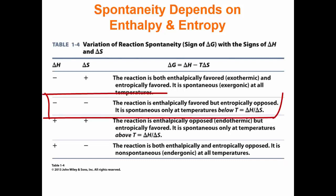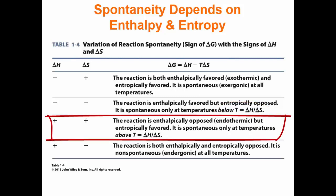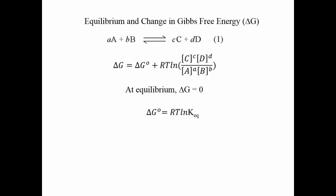When a reaction is exothermic but decreases in entropy, the spontaneity is dependent on temperature: at temperatures below the ratio of delta H over delta S, the reaction is spontaneous. If a reaction is endothermic but increases in entropy, it is only spontaneous at temperatures above the ratio of delta H over delta S. Only a handful of reactions in the cell actually occur at very large changes of delta G. The majority of reactions in the cell actually occur at or near equilibrium, at varying degrees of entropy and enthalpy.